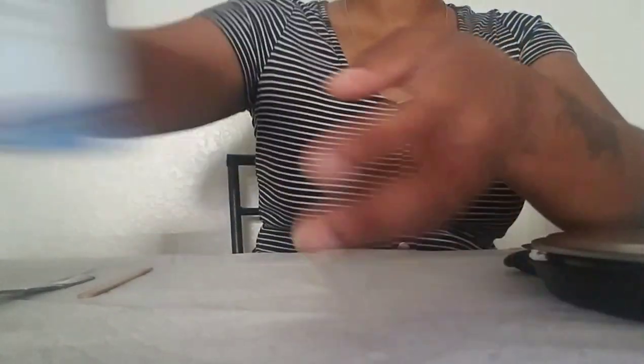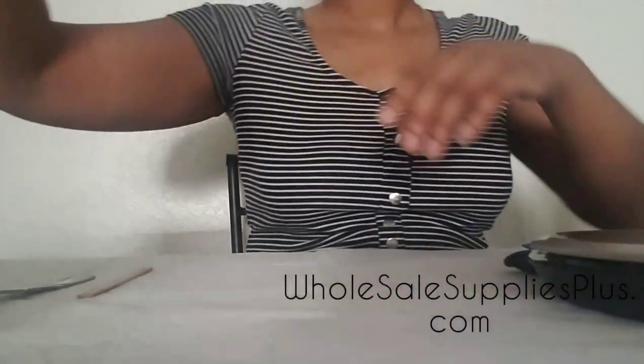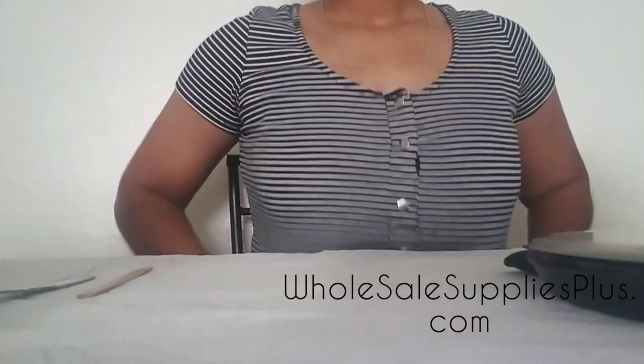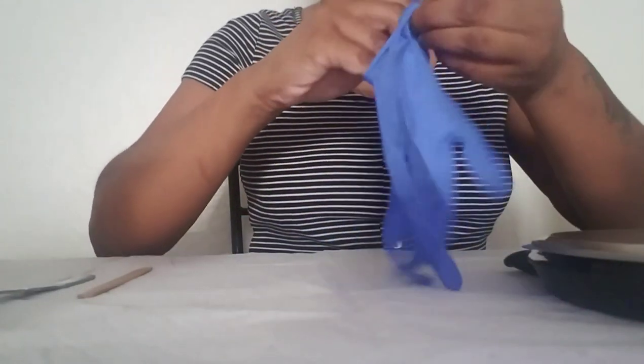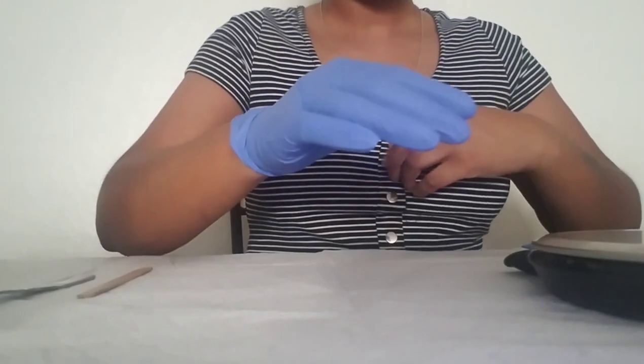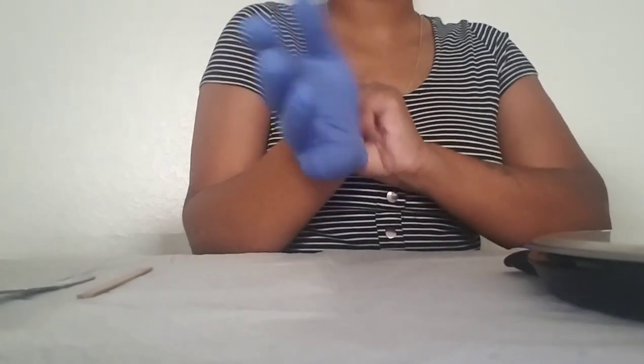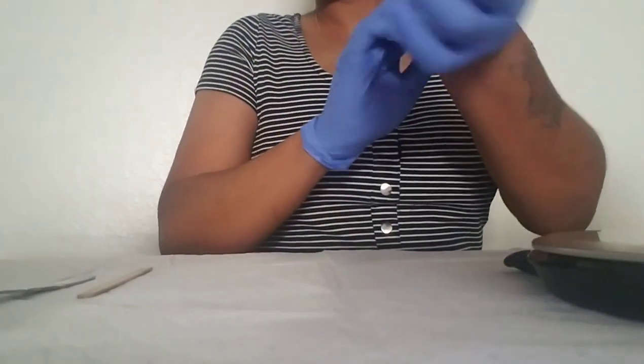This is polysorbate, which combines the water and the oils together. It's definitely a necessity when you are mixing oils and waters, because if you don't know, oil and water does not mix. You will have oil in one direction and water in the other direction.